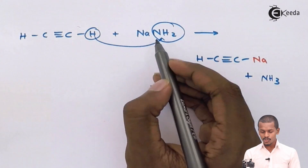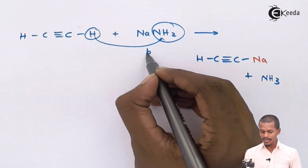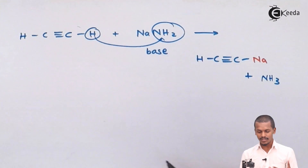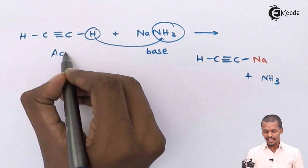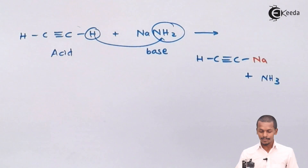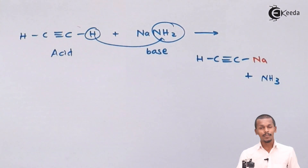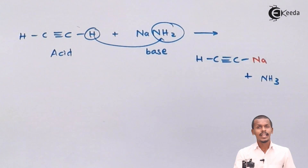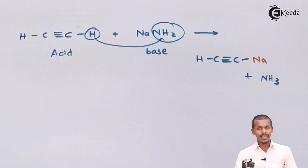The hydrogen removed goes along with NH2 to form NH3. Since NaNH2 is a base and this reaction takes place with a base, this molecule is obviously acidic in nature. That is the reason acetylene is acidic in nature compared to that of ethane and ethene.